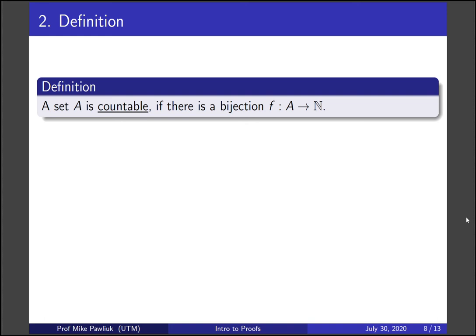So a set A is countable if it has the same cardinality as the naturals. In other words, there's a bijection from A to N. So countable sets for us are necessarily going to be infinite.